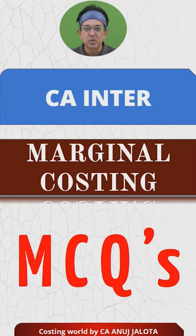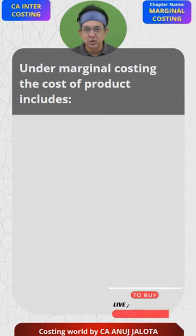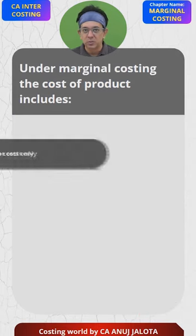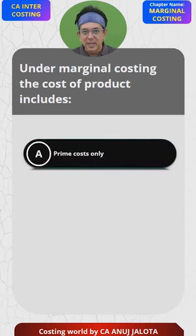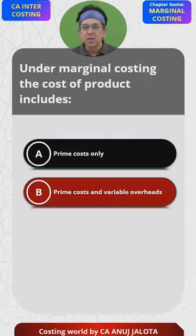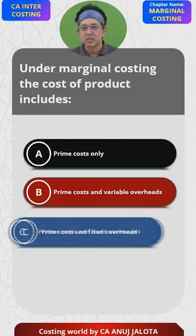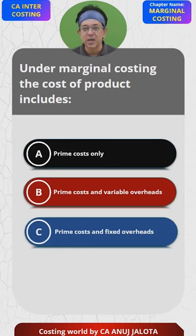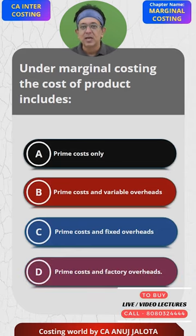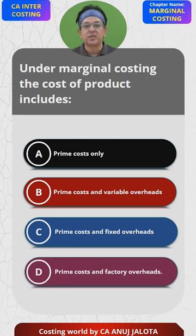Marginal Costing MCQs. Under Marginal Costing, the cost of the product includes: A. Prime Cost Only, B. Prime Cost and Variable Overheads, C. Prime Cost and Fixed Overheads, D. Prime Cost and Factory Overheads. Think of the correct answer.